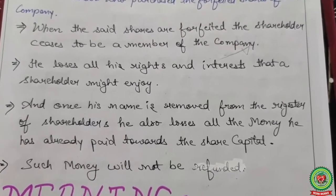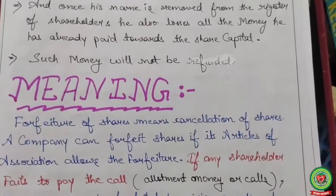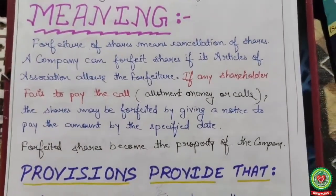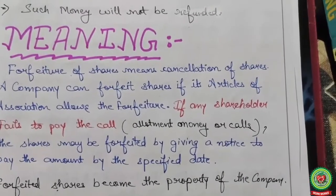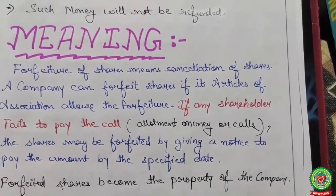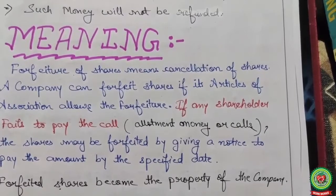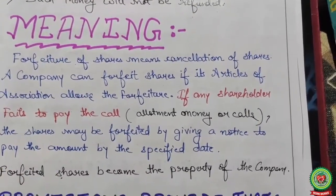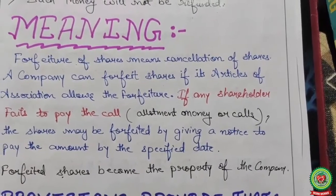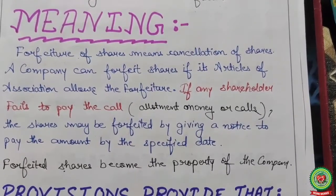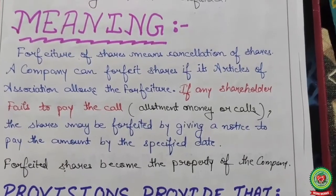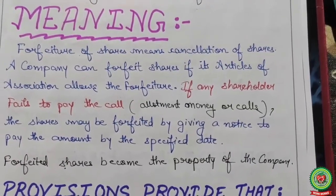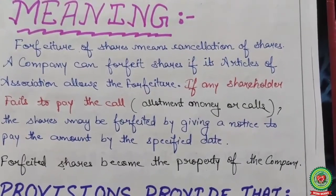Forfeiture of shares means cancellation of shares. A company can forfeit shares if its Articles of Association allow the forfeiture, and if the shareholder fails to pay the allotment money or calls. The shares may be forfeited by giving a notice to pay the amount by a specified date; at least 14 days' notice is required.